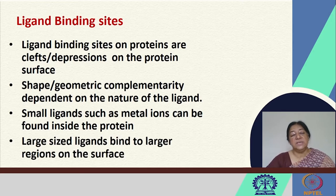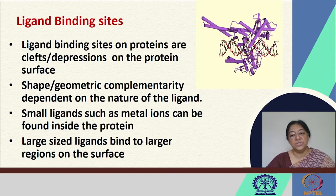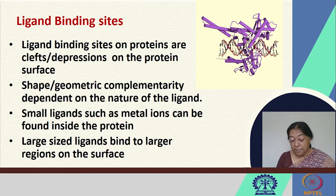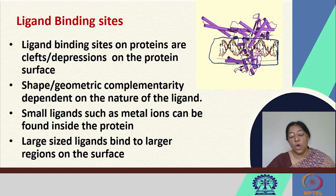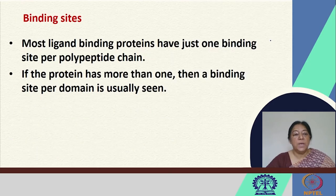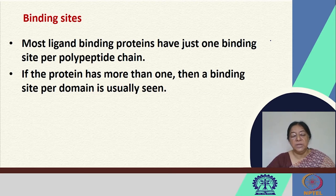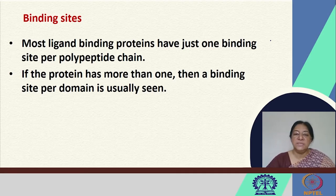Larger ligands tend to bind on larger regions on the surface. For example, if we look at DNA binding of a protein, we see that it binds through a larger surface on the protein molecule. Most ligand binding proteins have just one binding site per polypeptide chain, and if the protein has more than one subunit, then we have a binding site per domain.